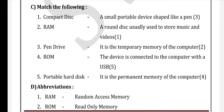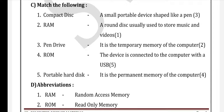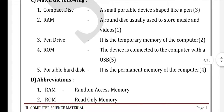Second: RAM is used for temporary memory of the computer. Third: Pen drive — a small portable device shaped like a pen. Fourth: ROM — it is a permanent memory of the computer. Fifth: Portable hard disk — the device is connected to the computer with a USB, Universal Serial Bus.